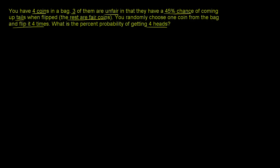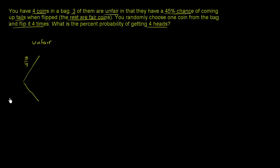So let's think about it. When we put our hand in the bag and we take one of the coins out, there's some probability that we get an unfair coin. Three of the four coins are unfair, so there's a 3/4 probability that we get an unfair coin. And there is only one out of the four coins that's fair, so there's a 1/4 probability that I get a fair coin.